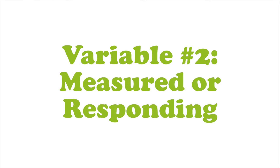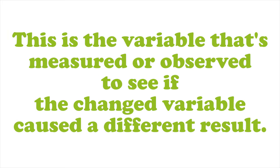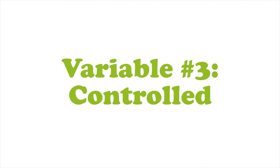Number two is the measured or responding variable. This is the variable that's measured or observed to see if the changed variable caused a different result. And the third variable is controlled — these are all the variables that the scientist keeps the same.